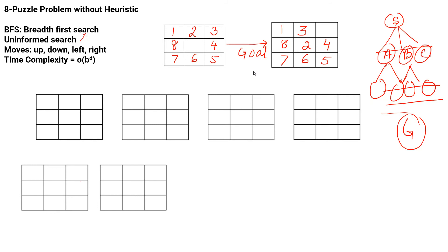I have already discussed BFS in detail; I will give you the link in the description. Here we are discussing the eight puzzle problem. This is the starting point and this is our goal. You can see numbers that we have to arrange in different ways to reach the goal state. We have one blank space, and with the help of this blank space we have to take the legal moves.